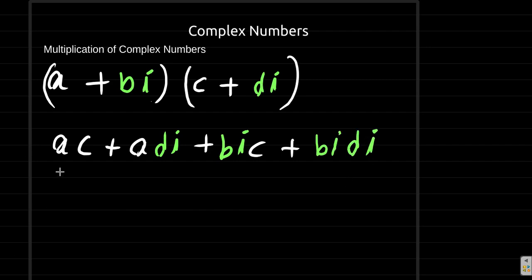Now this gives us ac plus adi plus bci plus bdi squared. When we work this out, we say i squared is what? Negative one.